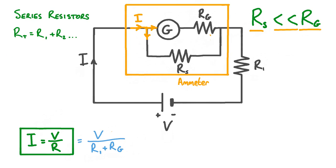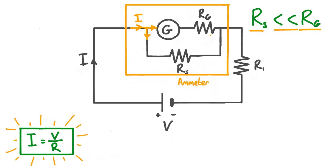When building an ammeter, it's important that the resistance of the shunt resistor is carefully chosen to get the best results. To work out the best value for this resistance, we can use Ohm's law. Rearranging Ohm's law to make R the subject gives us R equals V over I. Because we want to find the resistance of the shunt resistor Rs, V in our equation should be the voltage applied across the shunt resistor, Vs, and I will be the current in the shunt resistor, Is. Let's label Is in our circuit diagram, and we can also label Ig — the current in the galvanometer.